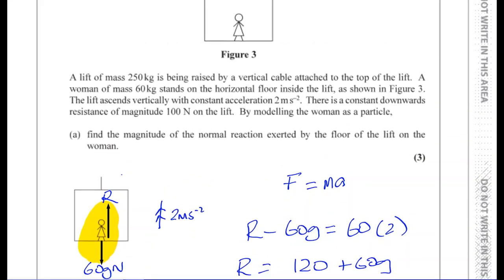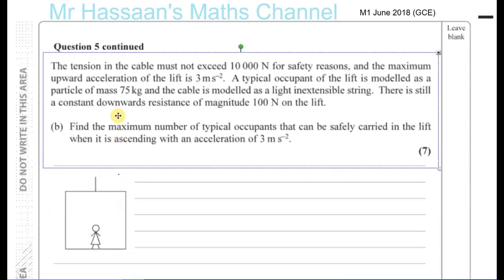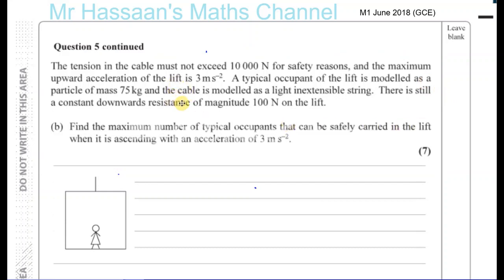For part B, there is a constant downward resistance of 100 newtons and the lift is of mass 250 kilograms. The tension in the cable must not exceed 10,000 newtons for safety reasons, and the maximum upward acceleration of the lift is 3 meters per second squared. A typical occupant is modeled as a particle of mass 75 kilograms, and the cable is modeled as a light inextensible string. There is still a constant downward resistance of magnitude 100 newtons. Find the maximum number of typical occupants that can be safely carried while ascending at 3 meters per second squared.